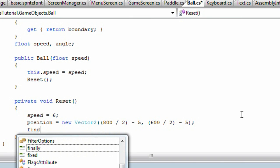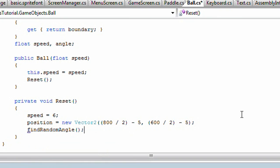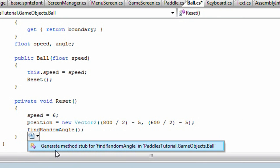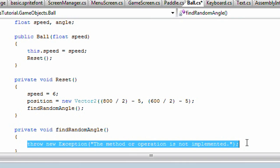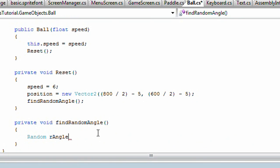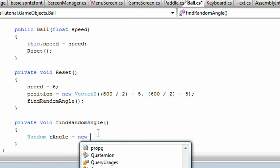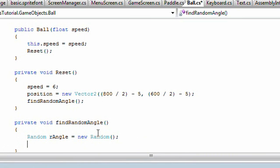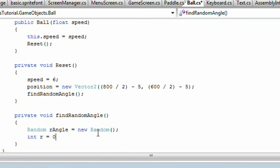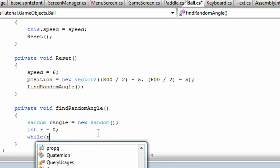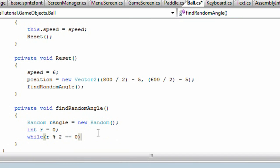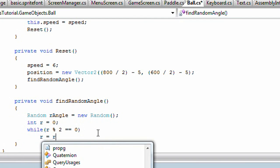Now we'll call find random angle and have it auto-generate it. And inside the find random angle, we want a random object called rAngle and is equal to new random. Then we want an integer r is equal to 0, and copy that while loop inside the text tutorial. While r is even, get a random number from rAngle.